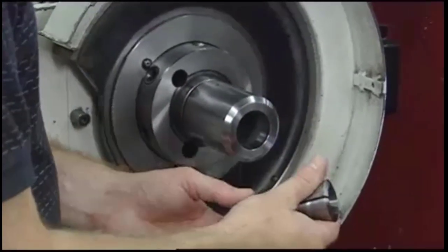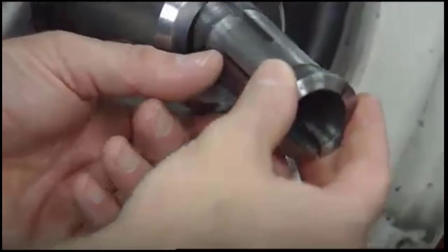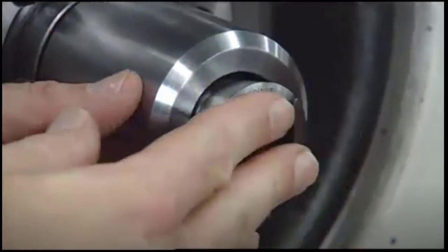Then clean both the collet and adapter, align the slot in the collet with the key, and insert the collet into the adapter.